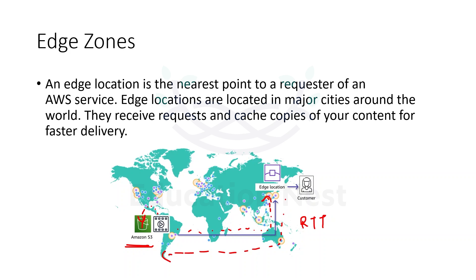Instead of that, what we can do is cache the data, because videos are generally static data — they are not changed frequently. We can even cache dynamic data, which we'll discuss more in module 12 on edge services. So we can cache a copy of this video into the Edge Location. Edge Locations are the nearest locations to the requester, managed by AWS itself, and present in major cities around the world — for example, in Japan.